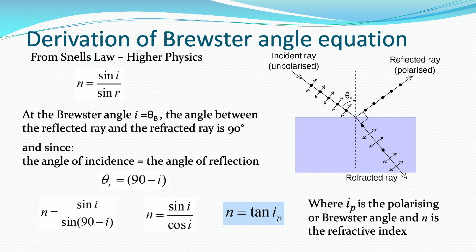There is the same derivation taking us to the relationship: n equals tan(ip), where ip is the polarising or Brewster angle, and n is the refractive index of the material that the light is going into. Remember that i is the angle that results in the reflected light being 100% plane polarised. At any angle different to that, the reflected light will still be partially polarised, but at the Brewster angle it is 100% plane polarised.